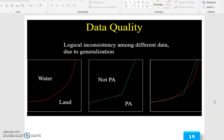Data quality: logical inconsistency among different data due to generalization. For example, water, land, no PA then air PA.